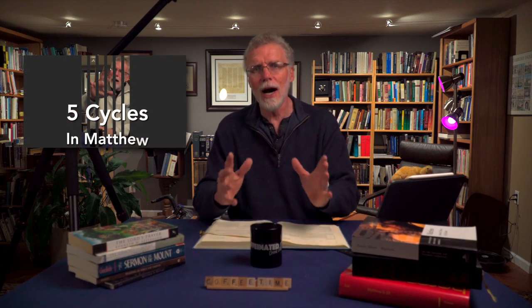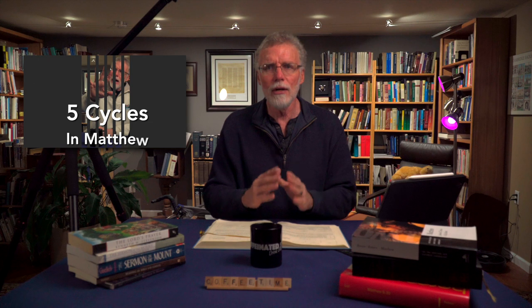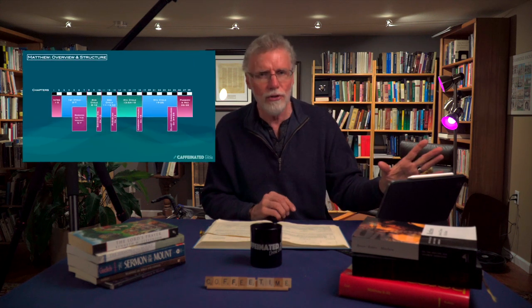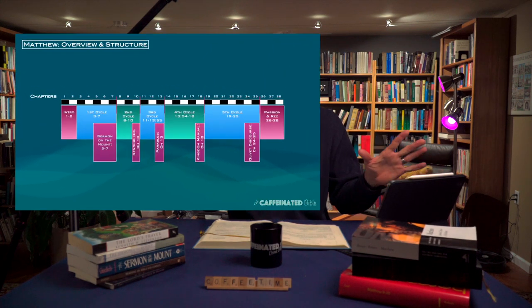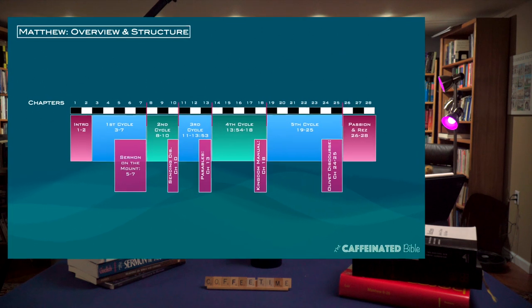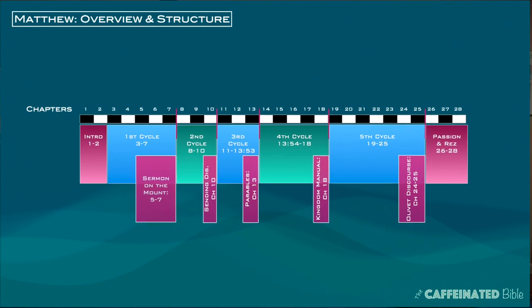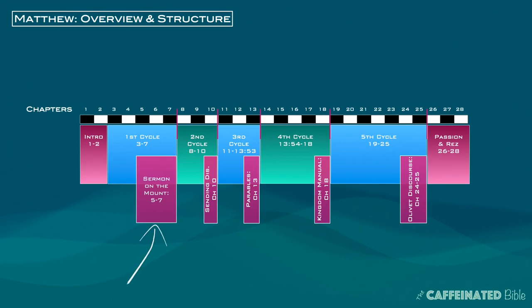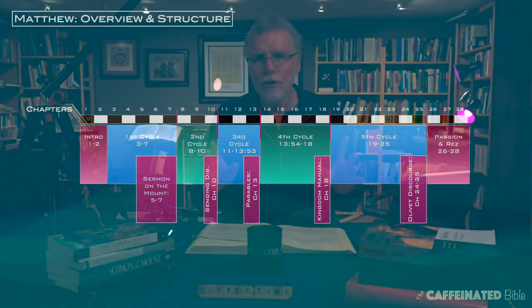Let's take a look at the context of this story first. In the video on the structure of Matthew's Gospel, I mentioned how it's organized around five cycles. These cycles consist of a collection of Jesus' teachings, and then his actions are collected in the following chapters. In this particular case, in the first cycle, chapters five through seven, we have the Sermon on the Mount. Now in chapters eight and nine, we have a collection of Jesus' actions. Matthew really wants us to see that Jesus is mighty in word and deed.